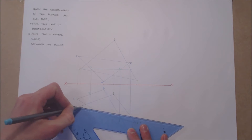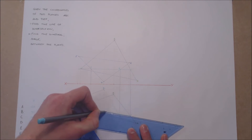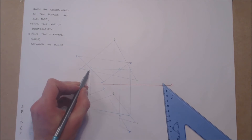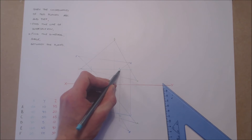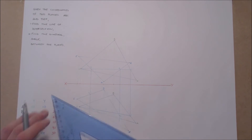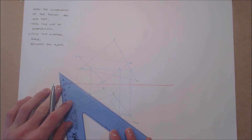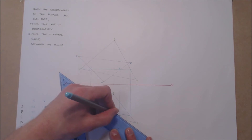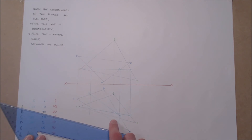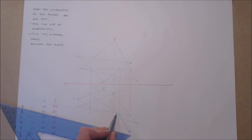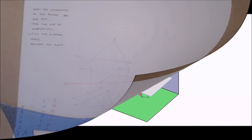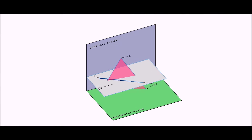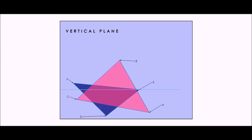Where these lines intersect gives you a point on the line of intersection. Using a second horizontal cutting plane from point E in elevation, we can find a second point on the line of intersection in plan.